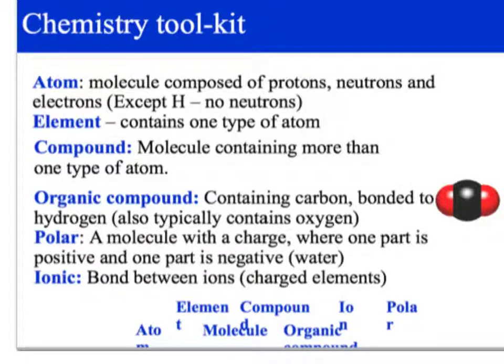Apologies, this slide hasn't transferred from PowerPoint as well as I'd liked — it's only the bottom bits that haven't worked. So, going back to junior science, probably year 7 or year 8: an atom. It's a molecule composed of protons and neutrons in the nucleus and electrons orbiting around the outside. The only exception is hydrogen because it does not contain any neutrons.